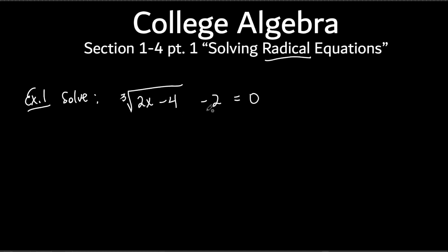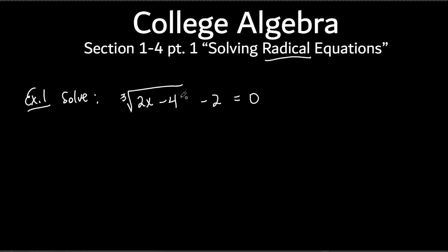The first thing we're going to do is get rid of this minus 2. In class today, I mentioned: if you had an equation like this, you would know automatically to get rid of the 2 first — not the 3, the 2 — because you always get rid of what's being added or subtracted first. So, we add 2 to both sides and get the cube root of 2x minus 4 equals 2.